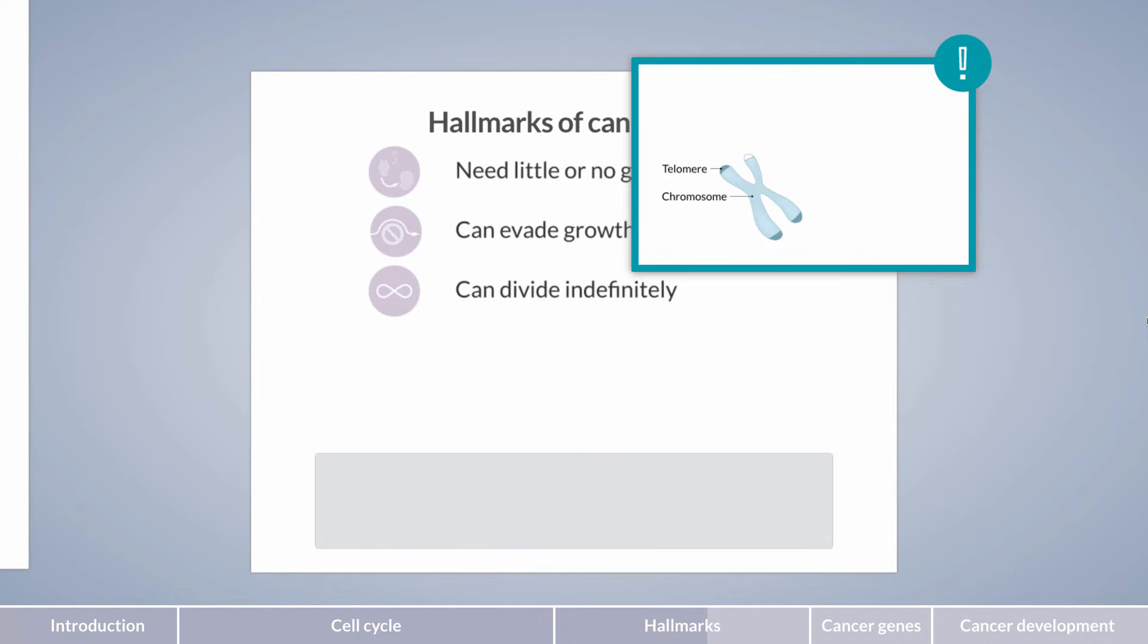However, in germline cells, where repeated division is required, the enzyme telomerase is able to elongate these ends, thereby enabling indefinite cell division. The interesting part? Telomerase is often reactivated in cancer cells, allowing them to divide indefinitely.